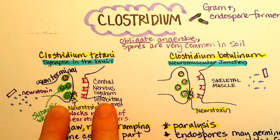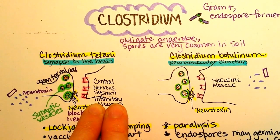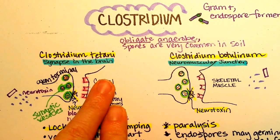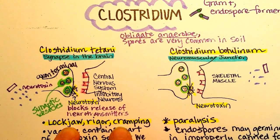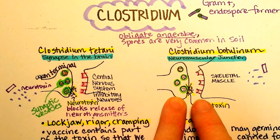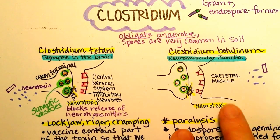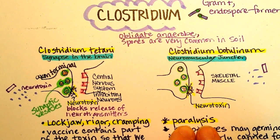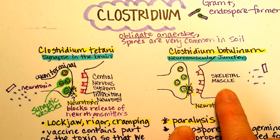In the case of tetanus, the neuron it acts on would normally say 'don't contract so much,' but since that signal is blocked, we end up with lockjaw, rigor, and cramping — too much contraction. With botulinum, the neuron acts on skeletal muscle, stopping it from contracting, which can result in paralysis. The really scary part is that it could result in respiratory arrest if the diaphragm is the muscle that is paralyzed.